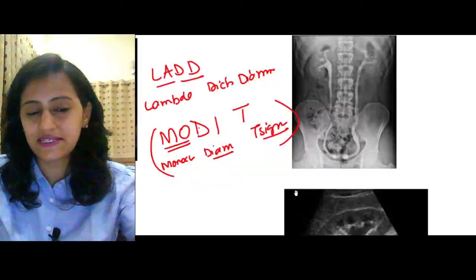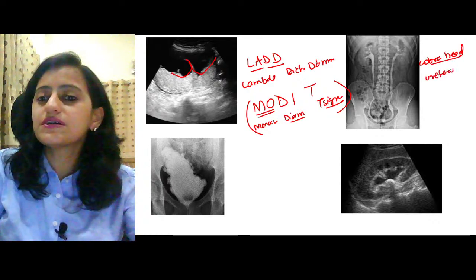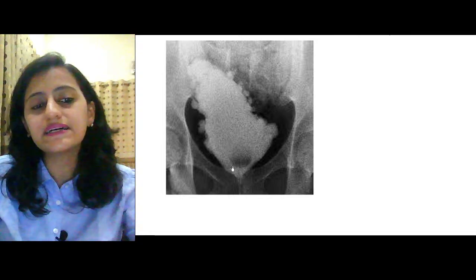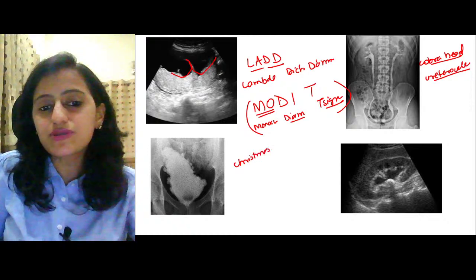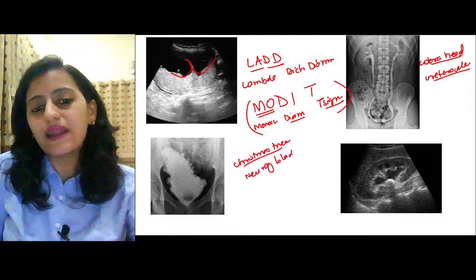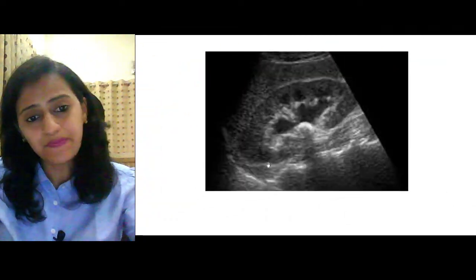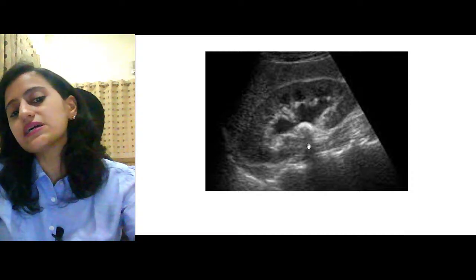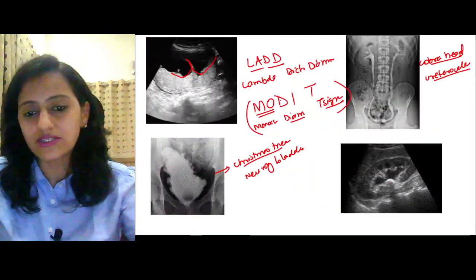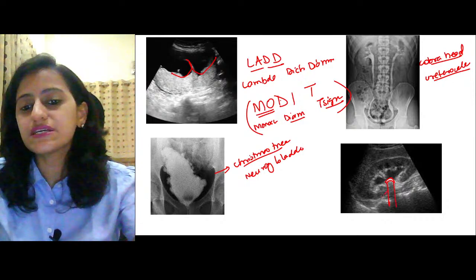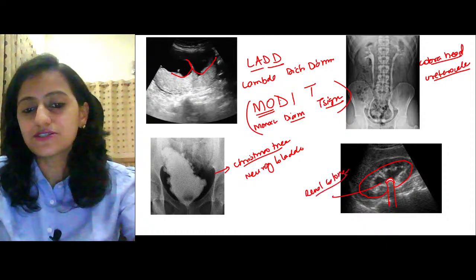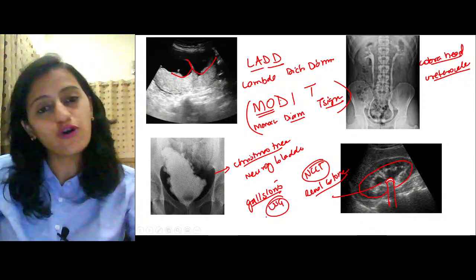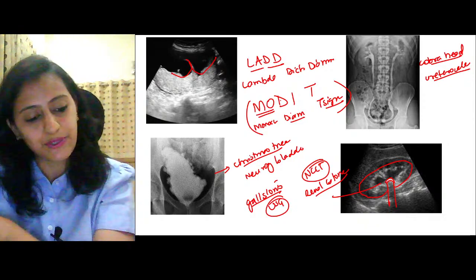Christmas tree appearance of the bladder — elongated bladder with multiple diverticula — seen with neurogenic bladder. Ultrasound image of kidney: stone identified by posterior acoustic shadowing with hydronephrosis = obstructing calculus. Investigation of choice for renal stone is non-contrast CT. Investigation of choice for gallstones — cholelithiasis and cholecystitis — is ultrasound.